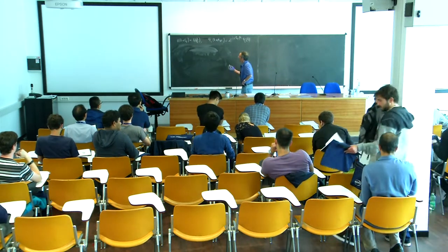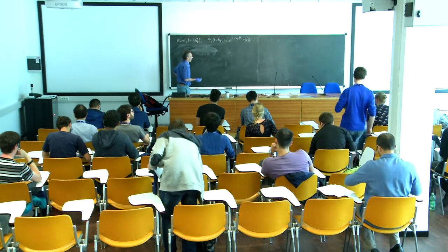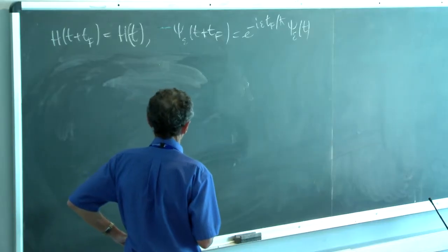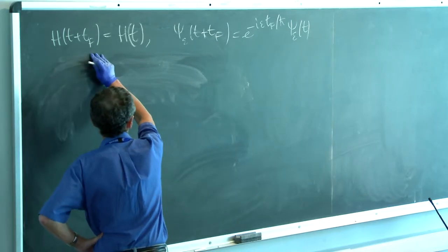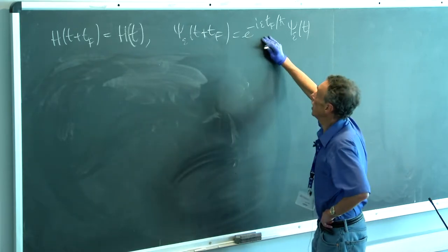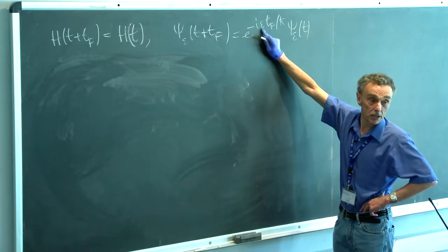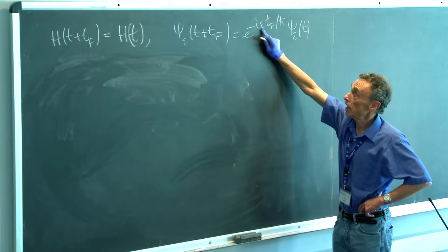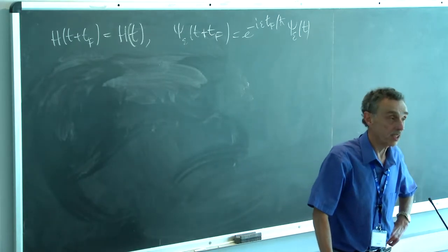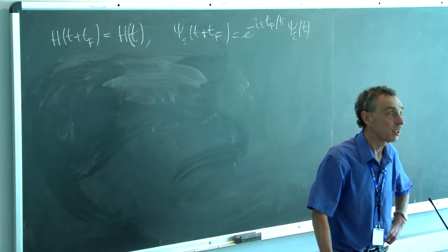We were talking about Floquet states. I remind you there were many things said between the previous lecture and this lecture. Let me remind you what quasi-energy states are, what Floquet states are. We have a Hamiltonian which is periodic in time, and we look for wave functions which, when we increment time by the period of the Hamiltonian, acquire a phase factor determined by the value epsilon, called the quasi-energy or Floquet eigenvalue. I prefer to call it quasi-energy to avoid confusion with dynamical systems terminology.